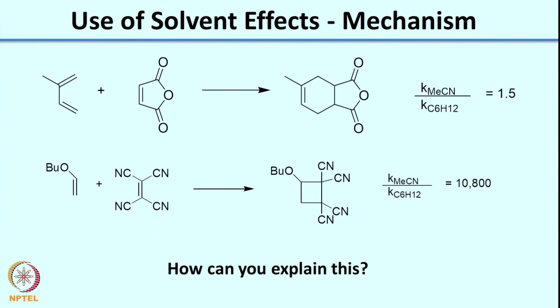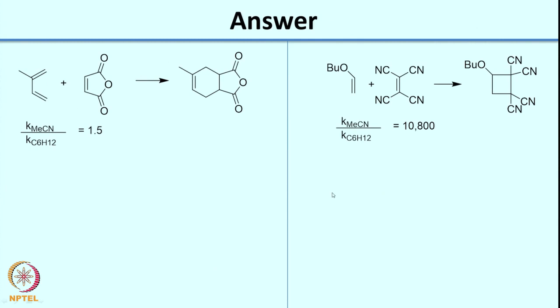Before leaving I had asked you a question. There were two reactions given. In the first case the solvent effect is not dramatic, whereas in the second case you see a large effect on reaction rate when you increase the solvent polarity from cyclohexane to acetonitrile. Hopefully you had time to work out this problem — let us look at the solution.